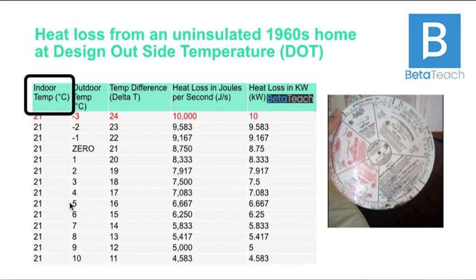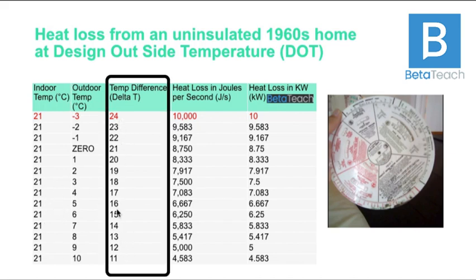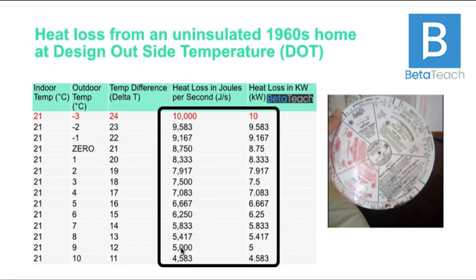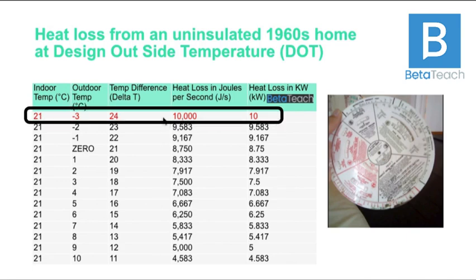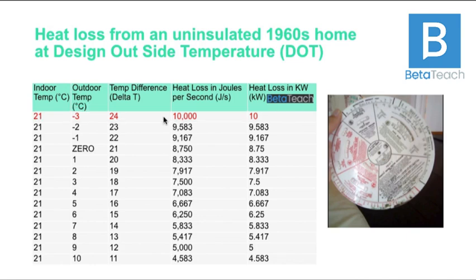Don't get too bogged down with the numbers here. We have the indoor temperature and the outside temperature — the outside temperature is always changing, so our heat loss is always changing. When someone does a heat loss calculation on a home, they're working out how quickly heat will move through the home on the worst day of winter. Across the UK, the average design outside temperature is around minus three — colder in Scotland, around minus 1.8 in London, but minus three is the UK average.